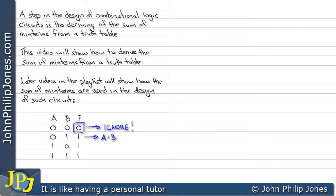We express that as the input variables a and b. Because a is a 0, we put a NOT above the a. Now we come down here and we can see this is also a and b, but b is a 0, so a NOT goes above that one. And finally we have a and b where none of them are 0, so that's what we end up with.